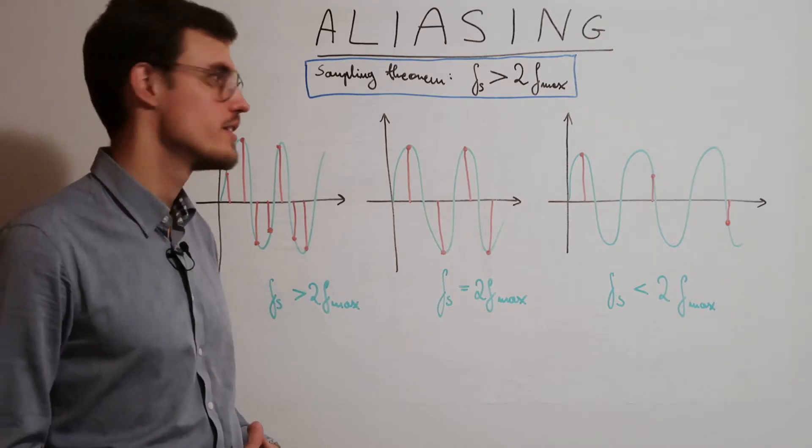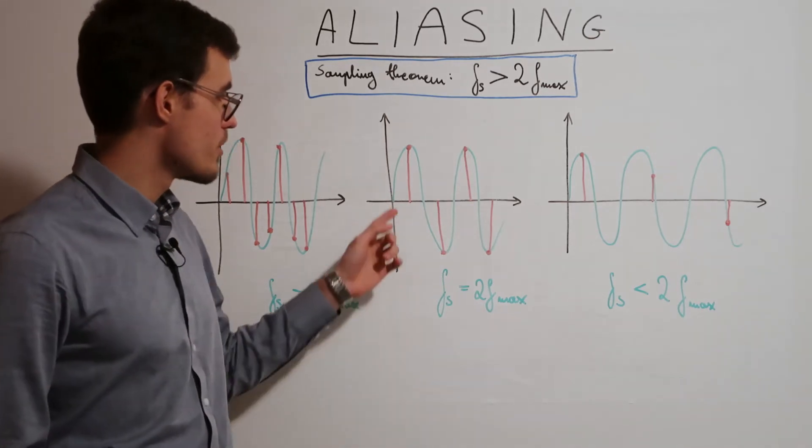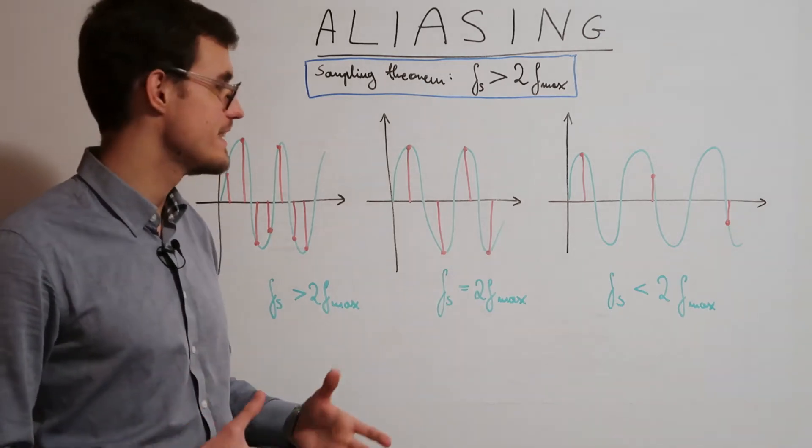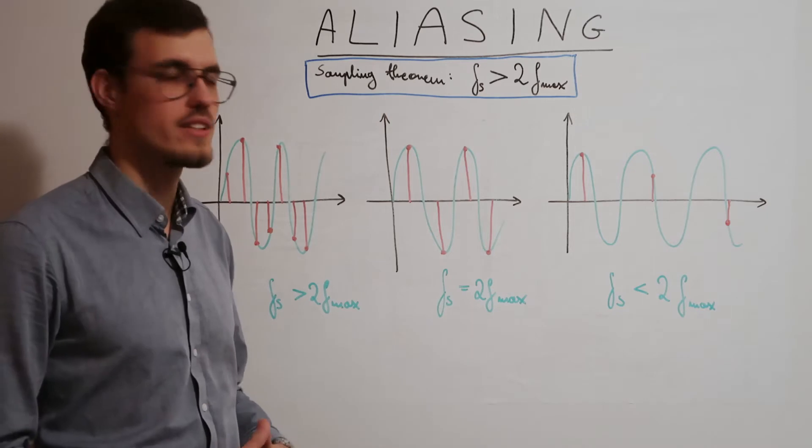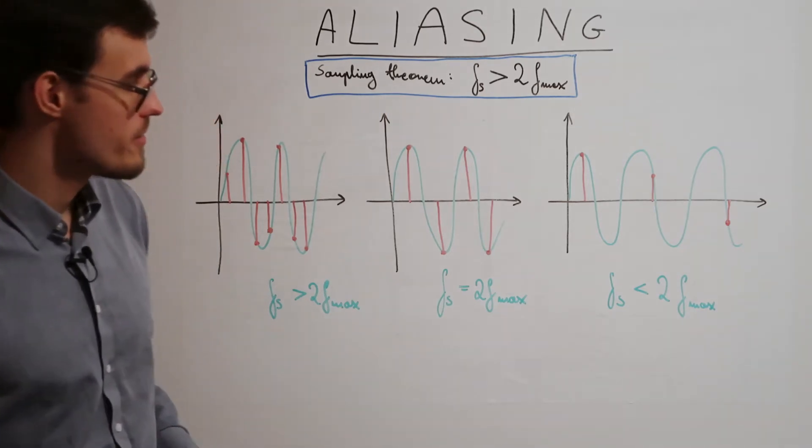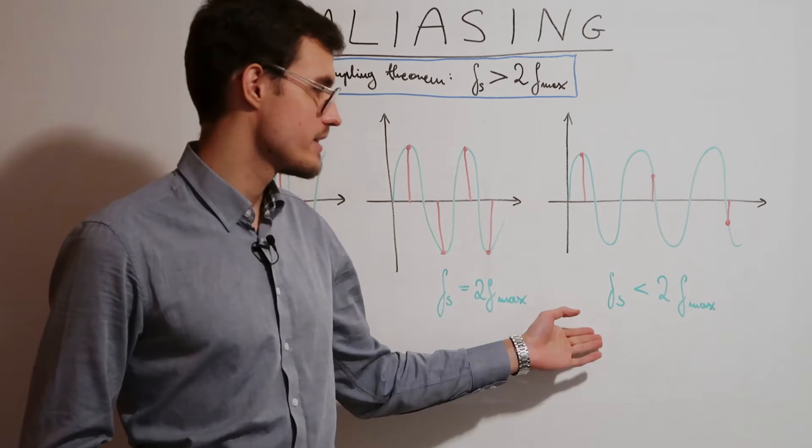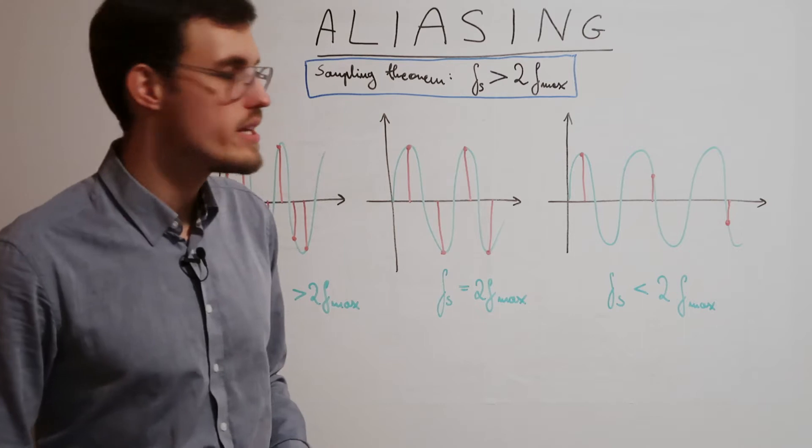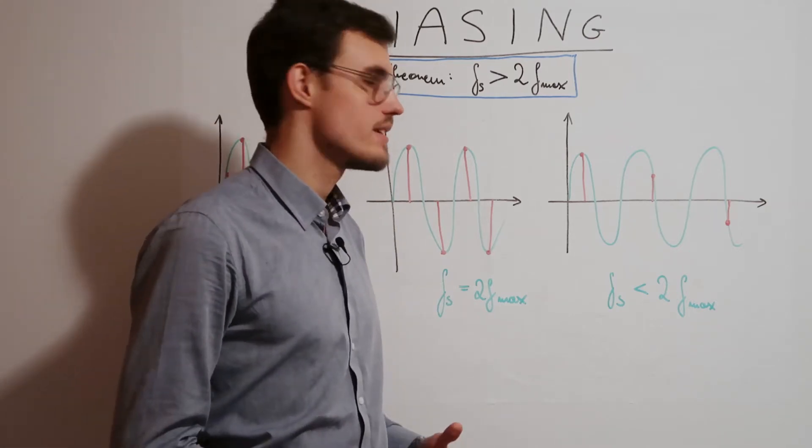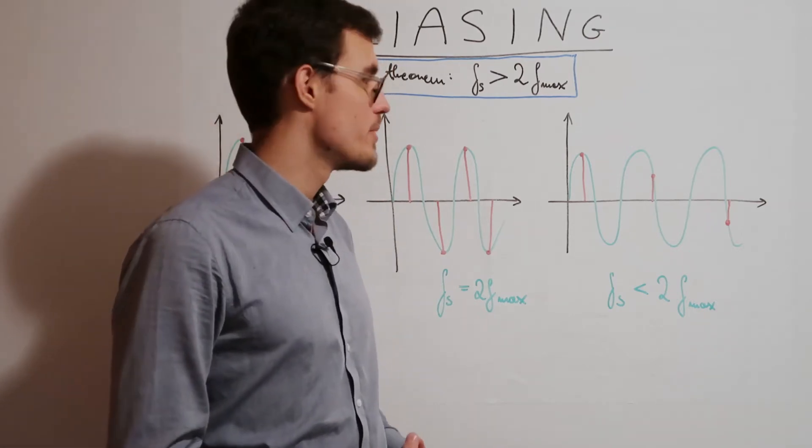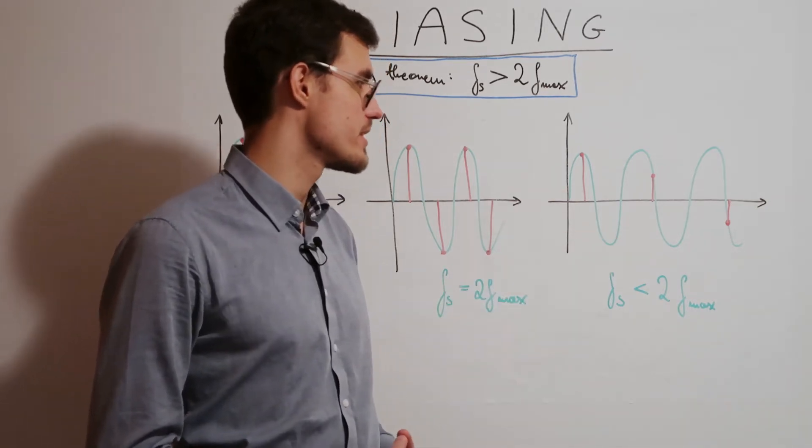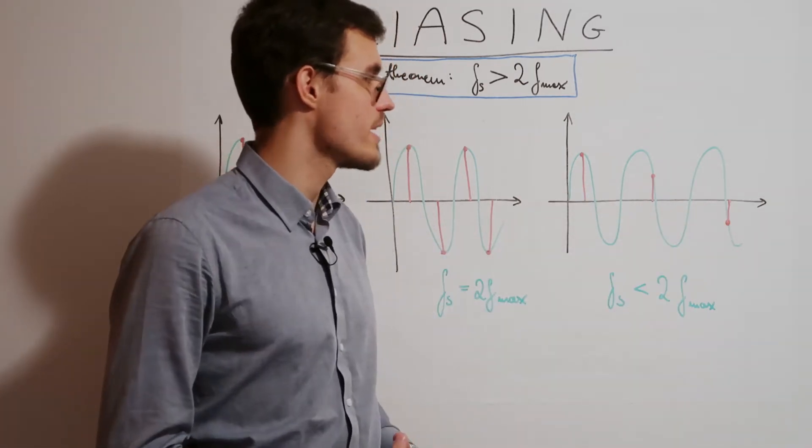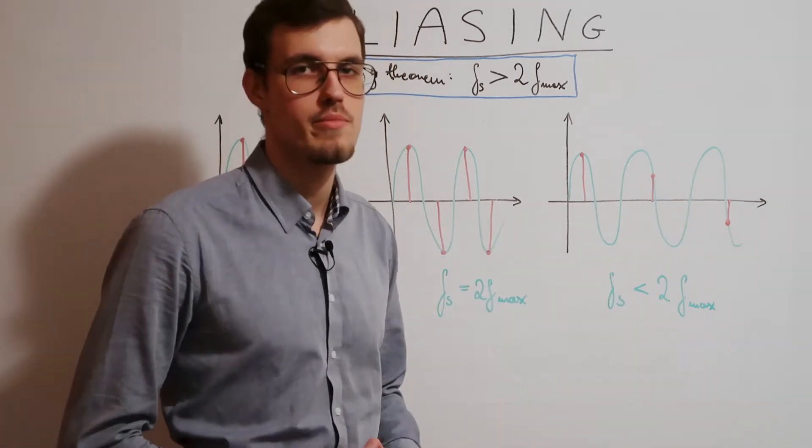In this case the sampling rate is lower than two times the maximum frequency in the signal, which means that we're taking less than one sample per period of the observed signal. Clearly these three samples do not resemble the original shape of the signal.